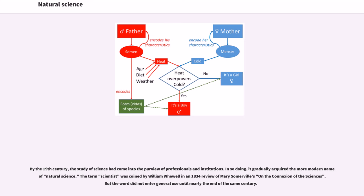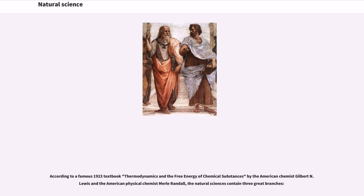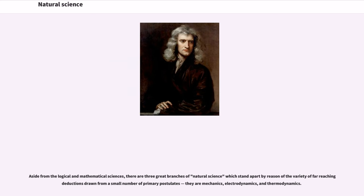By the 19th century, the study of science had come into the purview of professionals and institutions. In so doing, it gradually acquired the more modern name of natural science. The term scientist was coined by William Whewell in an 1834 review of Mary Somerville's On the Connection of the Sciences. But the word did not enter general use until nearly the end of the same century. According to a famous 1923 textbook Thermodynamics and the Free Energy of Chemical Substances by the American chemist Gilbert N. Lewis and the American physical chemist Merle Randall, the natural sciences contain three great branches. Aside from the logical and mathematical sciences, there are three great branches of natural science which stand apart by reason of the variety of far-reaching deductions drawn from a small number of primary postulates: they are mechanics, electrodynamics, and thermodynamics.